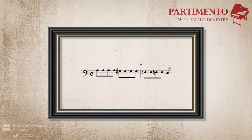This partimento in A minor opens with a moto del basso that descends chromatically from the first to the fifth scale step. Finaroli gives two possible ways of realizing this pattern. First, one could play it as a pattern with sevens on the G-sharp and the F-sharp, and sixths on the G and the F natural.